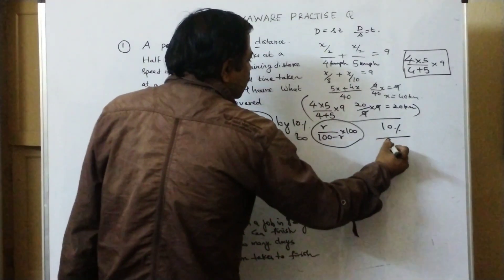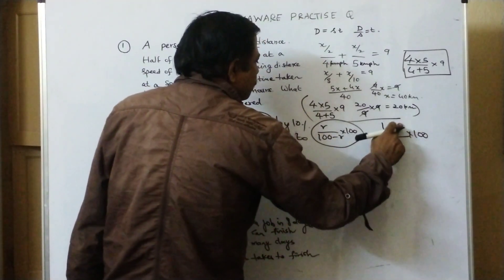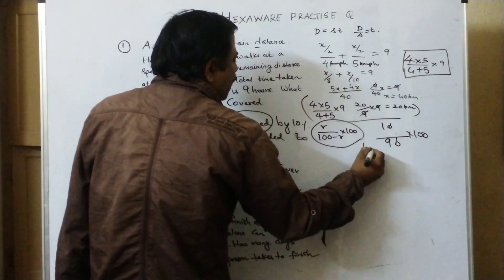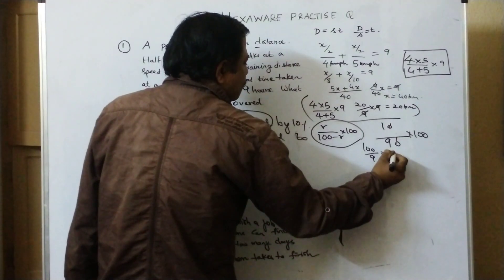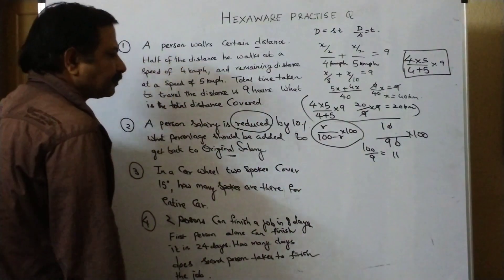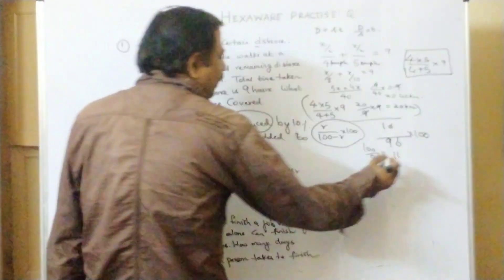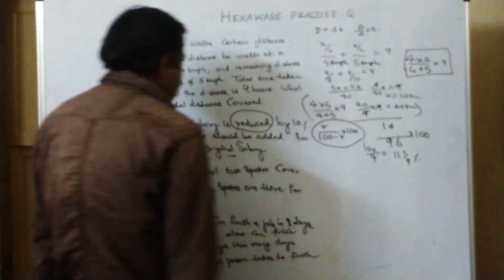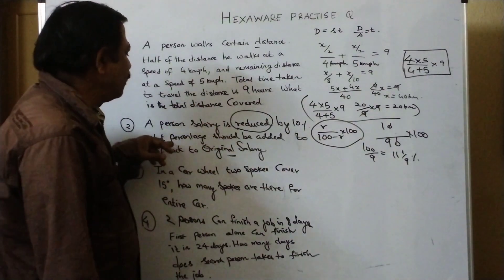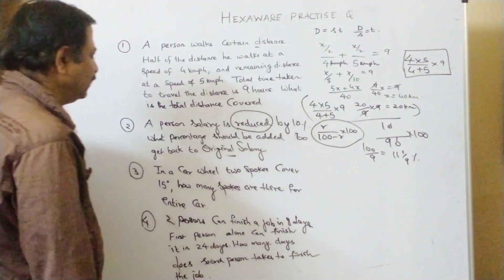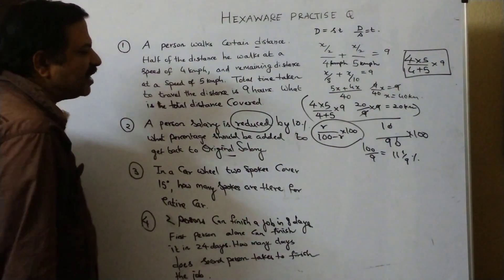That is nothing but reduced by 10%. Reduced by 10. 100 minus 10 is 90 into 100. Zeros get cancelled. 100 by 9. 100 by 9. 1 by 9, 11 by 9. A person's salary is reduced by 10%. By what percentage should be added? 11 and 1 by 9 percentage must be added to get back to the original salary.